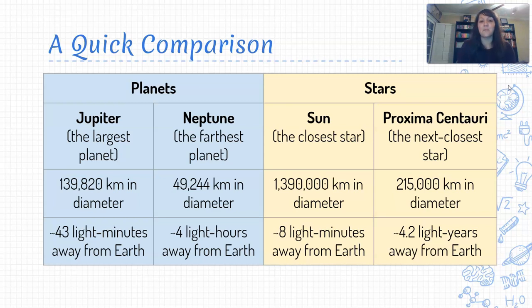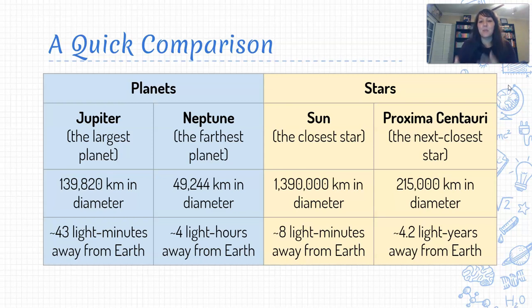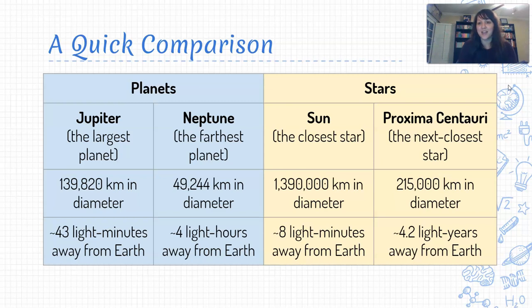In terms of distance, all of the planets in our solar system are on the order of some number of light minutes or light hours away from us. Anything we see of Neptune — being the farthest planet — the light bounced off Neptune about four hours before we see it, meaning anytime we look at Neptune, we're looking about four hours into the past. But for stars, Proxima Centauri is 4.2 light years away. Anytime we see light from Proxima Centauri, we are looking years into the past. Other stars are even farther — it takes even longer for the light they produce to reach us.